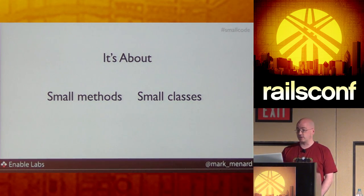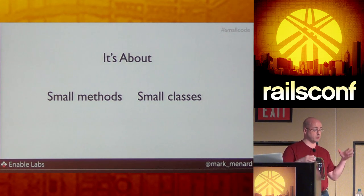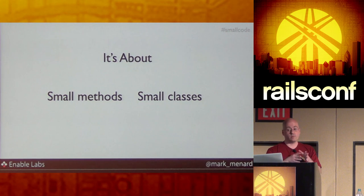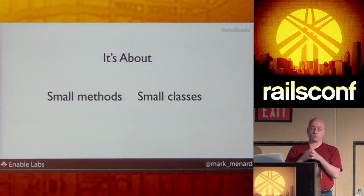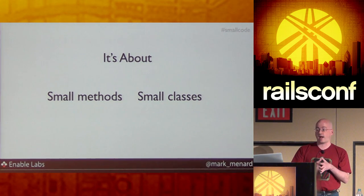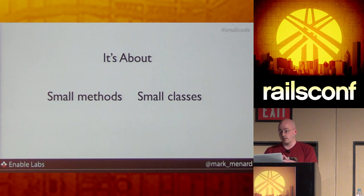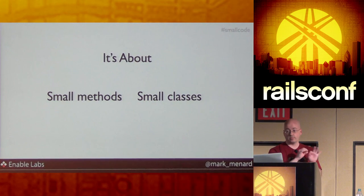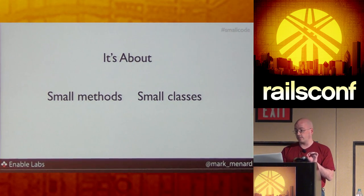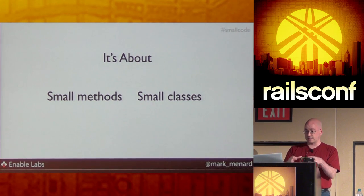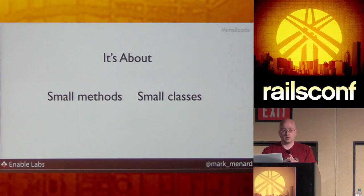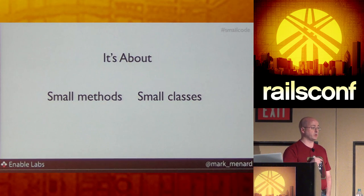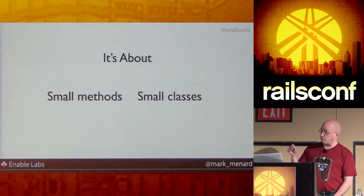Small methods are the foundation of writing small code. Without the ability to decompose large methods into small methods, we cannot write small code, and without small methods we can't raise the level of abstraction. To write small code, we have to be able to decompose large classes into smaller classes, extract responsibilities out of them, and base them on higher level abstractions. Small classes are what lead to reusability and composability.